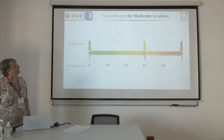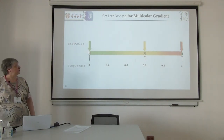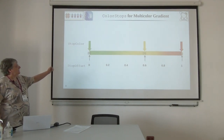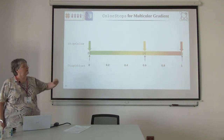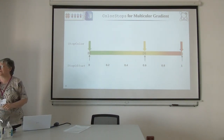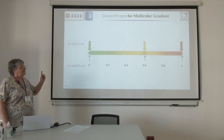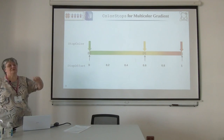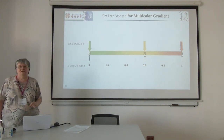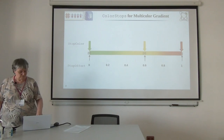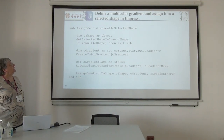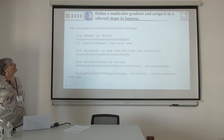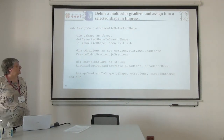So a multi-color gradient could be: at offset 0 we have green, at position 0.6 we have yellow, and at position 1 we have red — and we have a multi-color. We will use this example gradient and see how we can create it using a macro. The example I will show is 'assign color gradient to selected shape.' It has four steps.